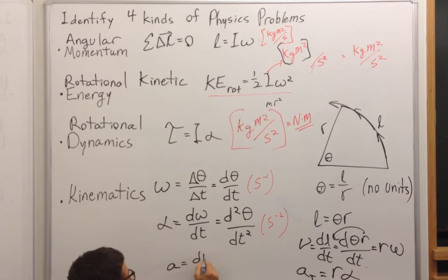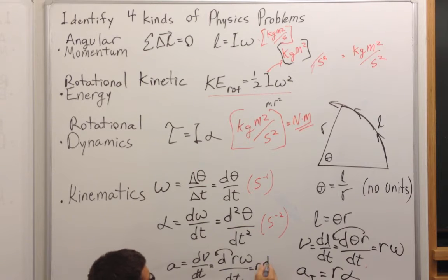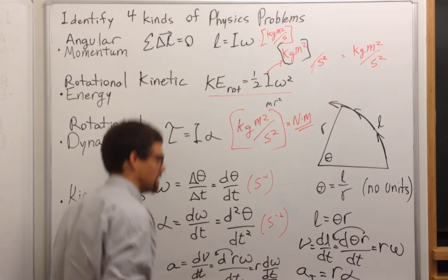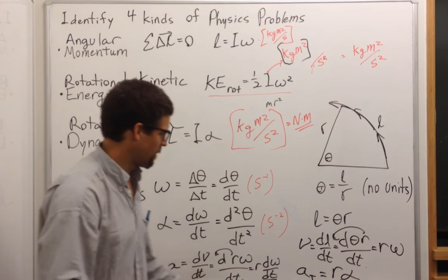Acceleration is equal to the rate of change of velocity, which is equal to the rate of change of r omega. R can come out, and we have r times d omega dt, and d omega dt is just alpha, angular acceleration.